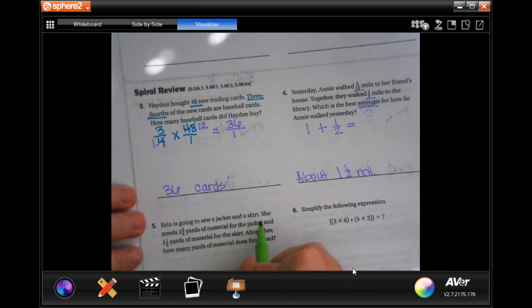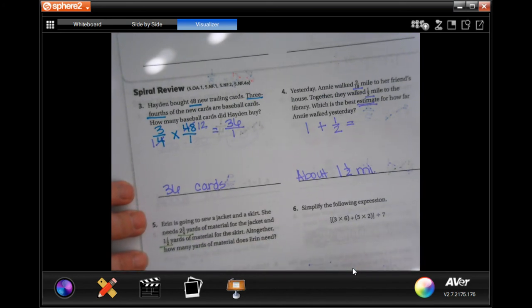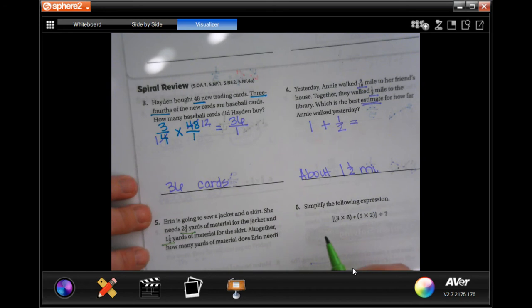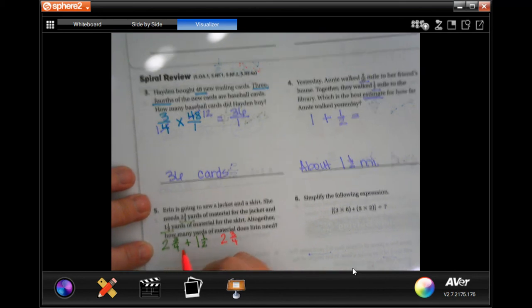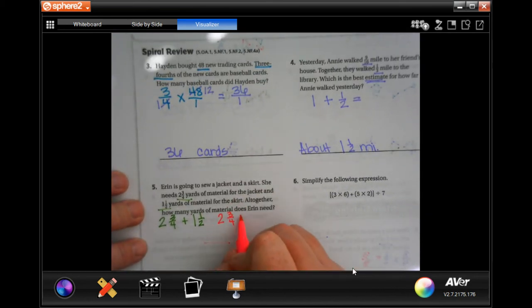Erin is going to sew a jacket and a skirt. She needs 2 and 3 quarters yards of material for the jacket and 1 and 1 half yards of material for the skirt. Altogether, how many yards of material does she need? So, 2 and 3 quarters and 1 and 1 half. So, first, I need a common denominator, which of 2 and 4 is going to be 4. So, I'm going to do 2 and 3 quarters, because that's already 4. Plus, in order to get the 2 to 4, I had to multiply it by 2. So, I need to multiply the top by 2. So, I'm going to get 2 and 2 fourths.